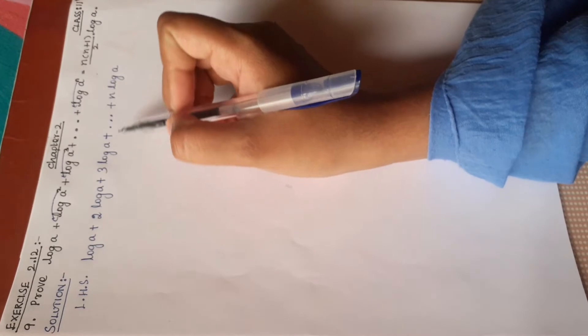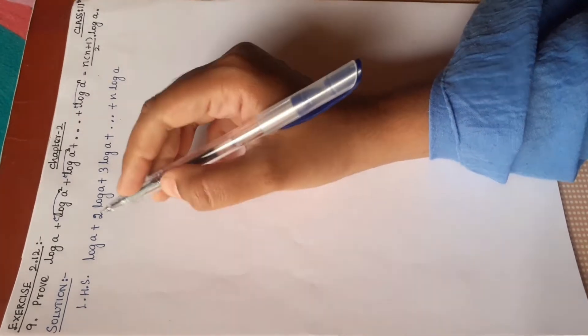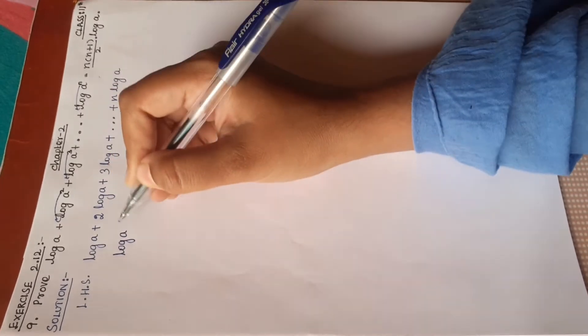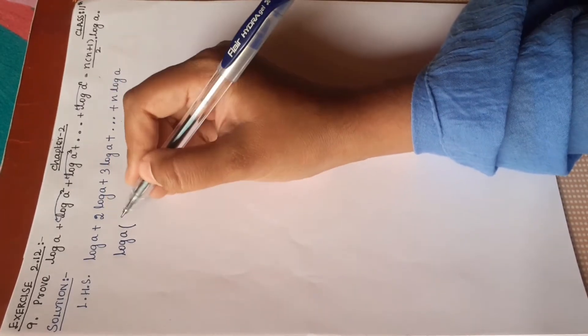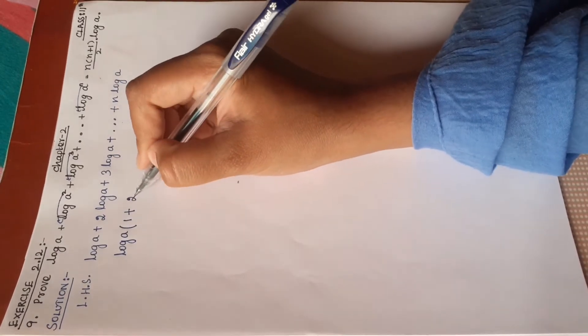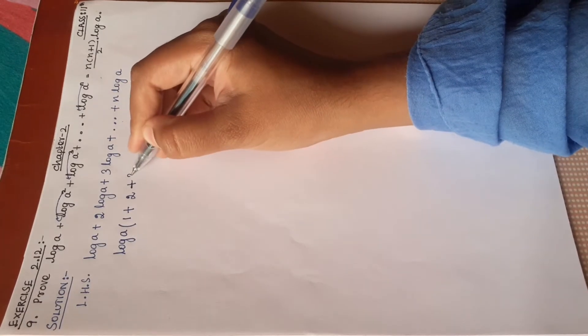log a is common in all terms. Taking log a common outside, we have: log a × (1 + 2 + 3 + ... in the last term).